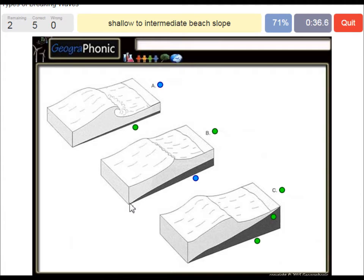A shallow to intermediate beach slope is what we see in picture B, and in picture A we see a plunging breaker.